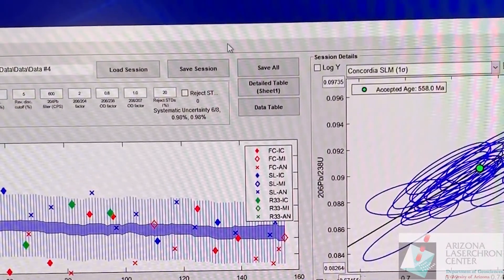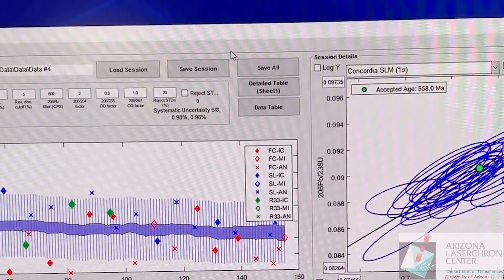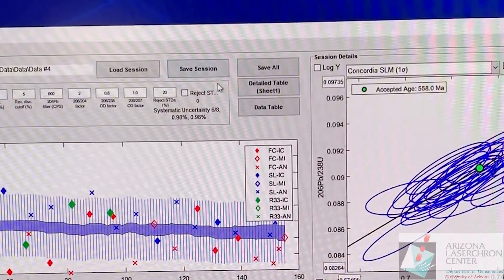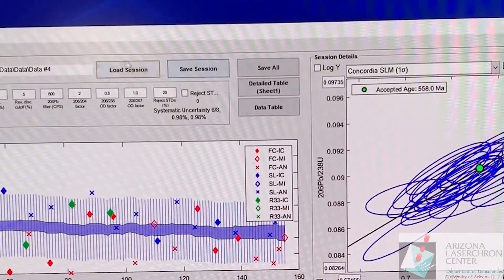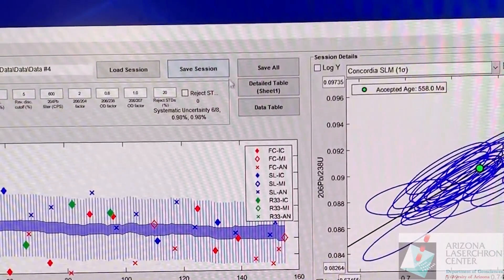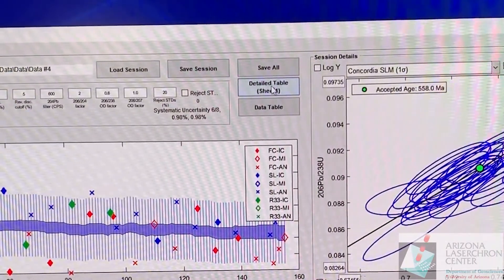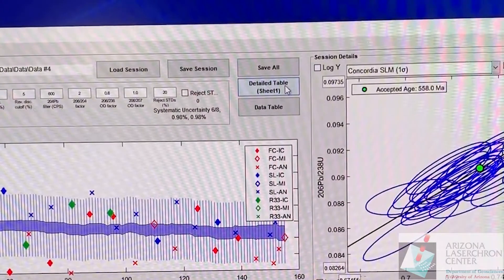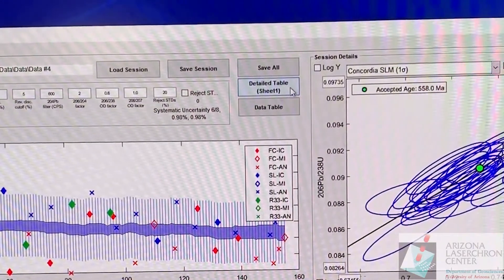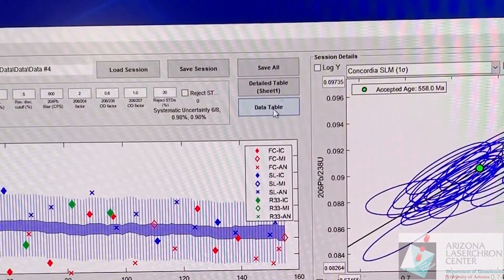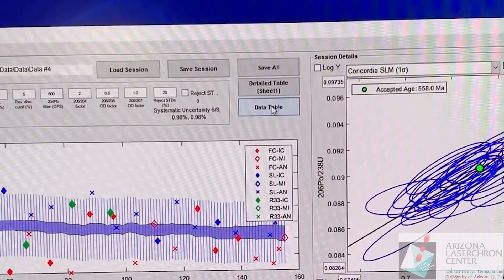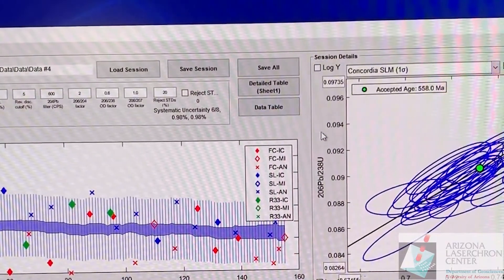There are three things you'll want to save but I'm going to do these all automatically. If you want to do them individually you can save the MATLAB session here by clicking on save session. You would load that later if you like. I also want to save a detailed table. This is the old sheet one in AgeCalc on the legacy AgeCalc and there's also a simplified data table.